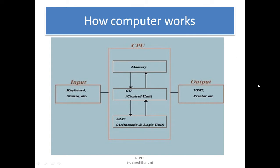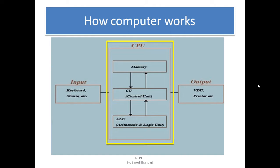First, let's see how a computer works. In computers, generally there are three units: one is the input unit, next is the central processing unit. The input unit is specially designed to take input from the user. There are many input devices like keyboard, mouse, camera, trackball, trackpad, and light pen. These are all input devices responsible for taking input from the user and sending it to the central processing unit for further processing.